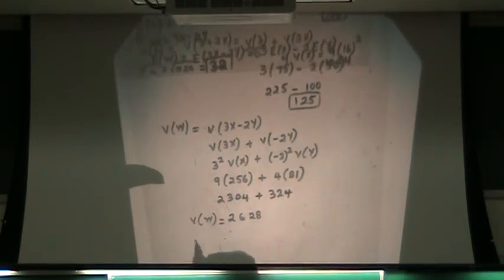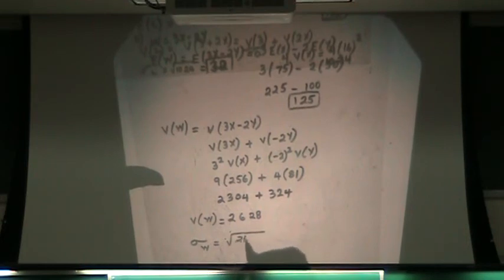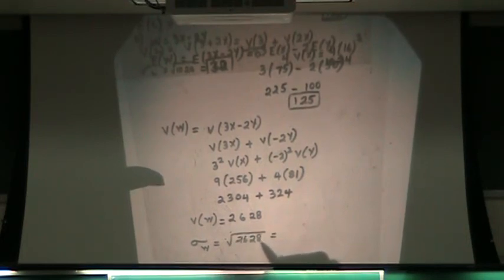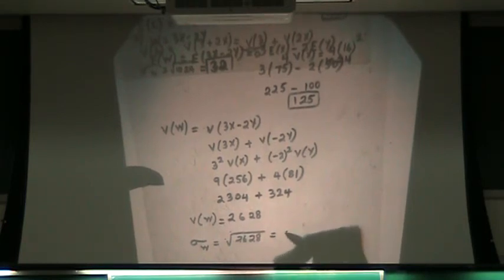And therefore sigma W is equal to the square root of 2628, which is approximately 51.264.